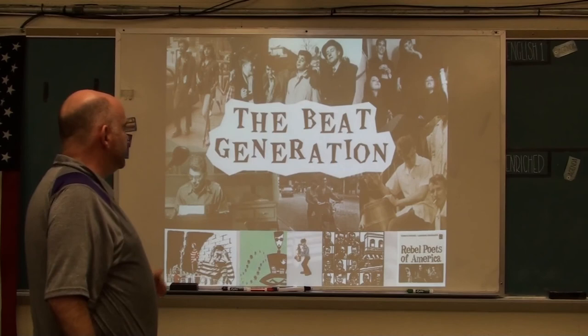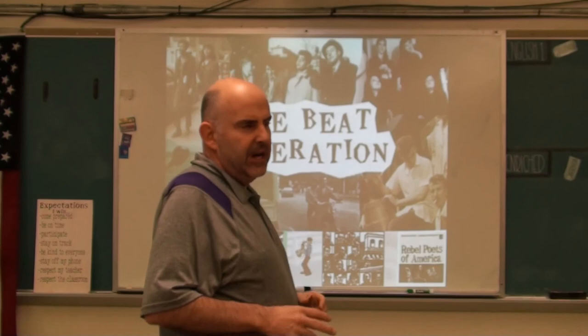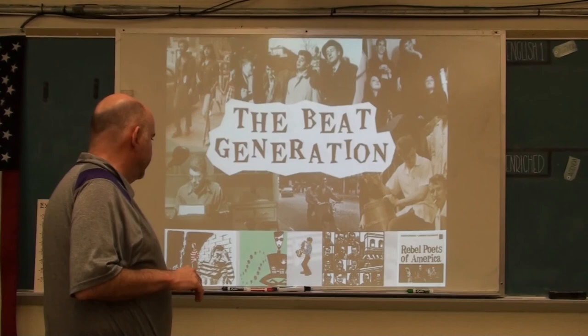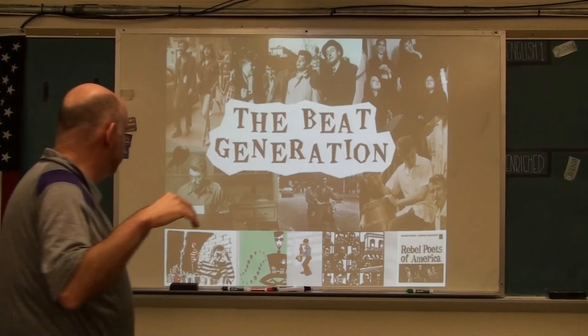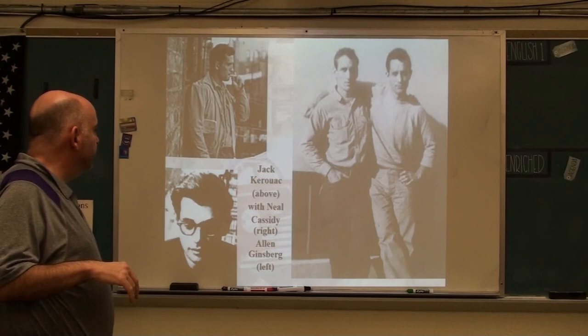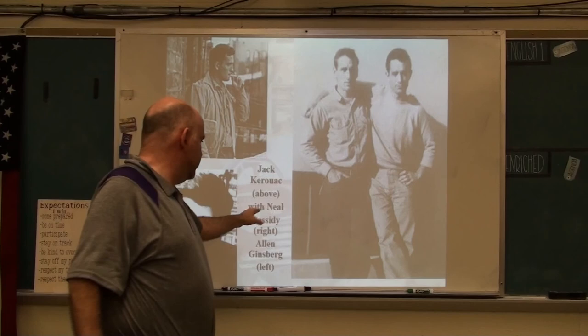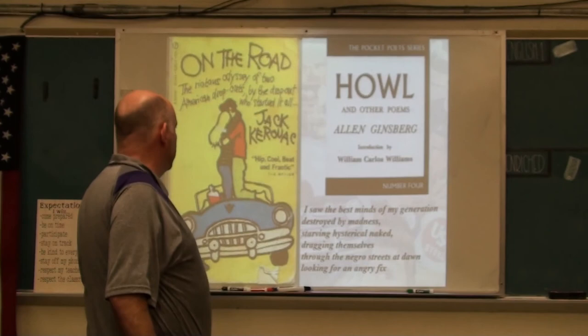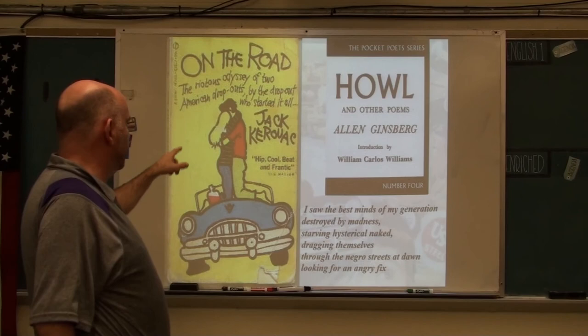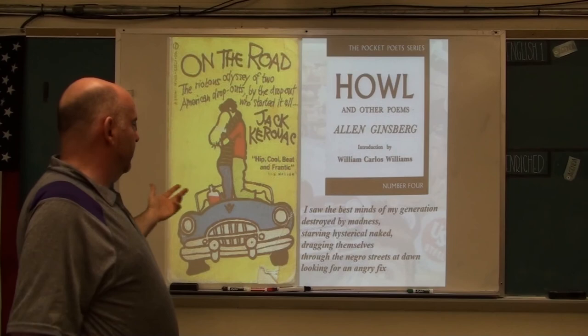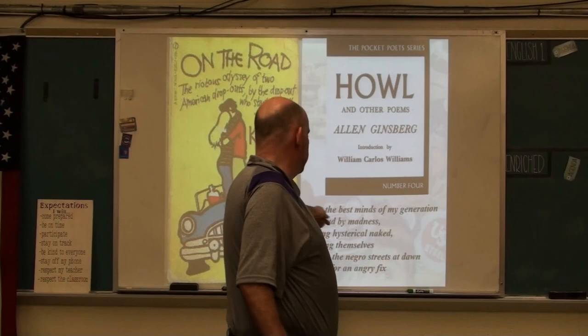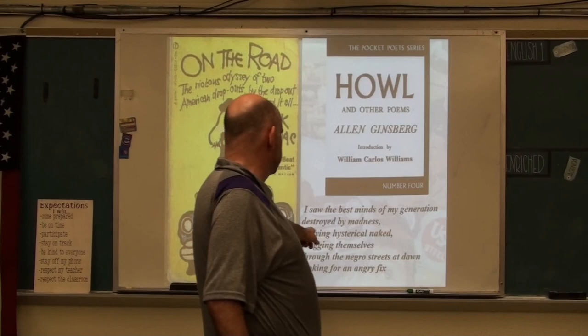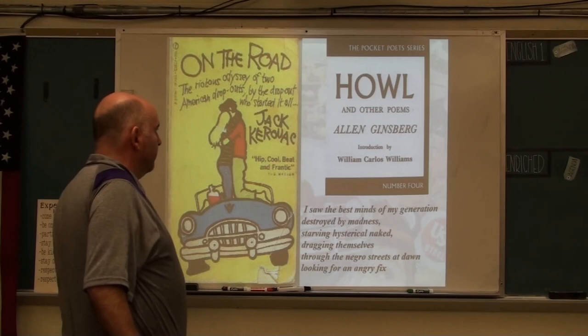The Beat Generation — you started to see these rebel poets in the inner cities. These guys hung out in coffee houses in the late 1950s and early 1960s. These beatniks would grow goatees, wear berets and striped shirts. Jack Kerouac, Neal Cassady, and Allen Ginsberg would all become famous. Cassady and Ginsberg we'll see again when we get into the 1960s and the hippie generation, but they start out in the beatnik generation. Jack Kerouac wrote the famous book On the Road. Allen Ginsberg wrote poems including these lines: 'I saw the best minds of my generation destroyed by madness, starving and hysterically naked, dragging themselves through the negro streets at dawn looking for an angry fix.'